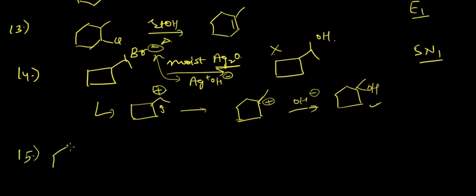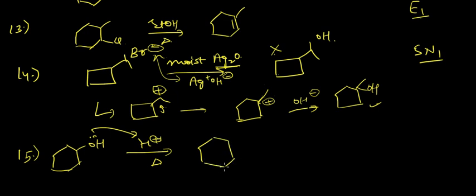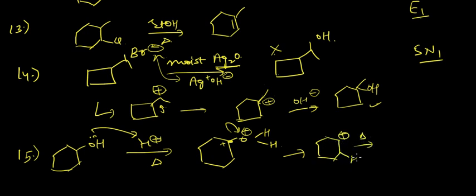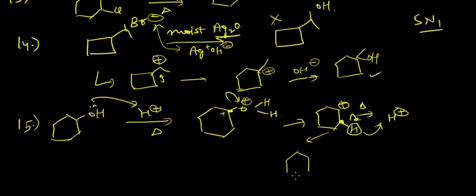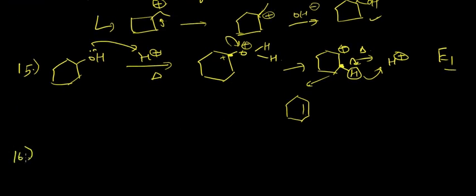In the second-to-last example, with H⁺ and heat: the oxygen takes up a proton, forming a positive charge. Since we are also heating, a hydrogen is removed from the adjacent carbon and a double bond forms. This is an E1 reaction.